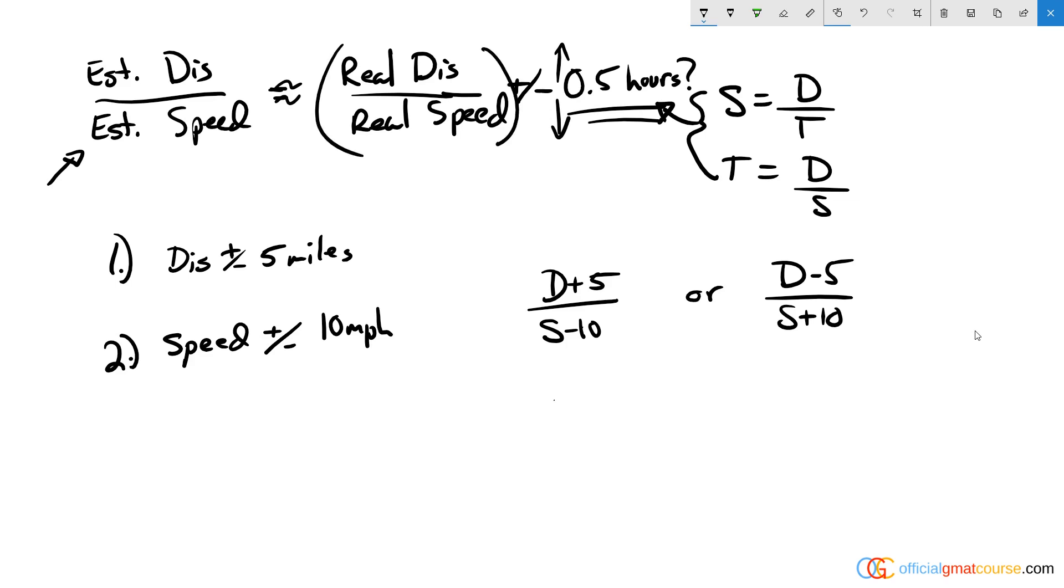Statement one tells us the distance is within five miles of the real distance, and the speed estimate is within 10 miles per hour. Now without knowing speed, I think that statement one is definitely insufficient.